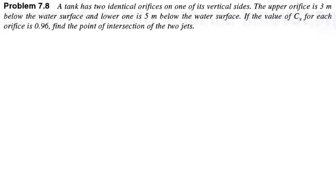Welcome students. First let's see some problems related to orifices. A tank has two identical orifices on one of its vertical sides. The upper orifice is 3 meters below the water surface and the lower one is 5 meters below the water surface. If the value of CV for each orifice is 0.96, find the point of intersection of the two jets.